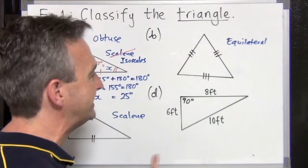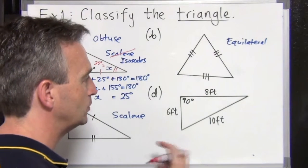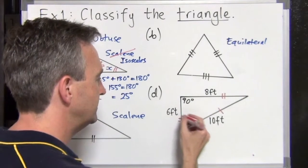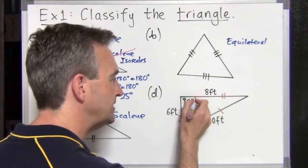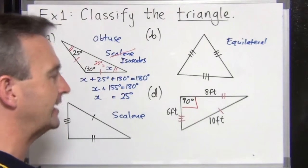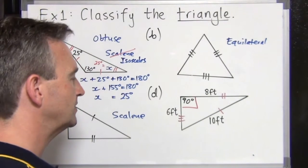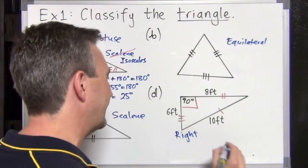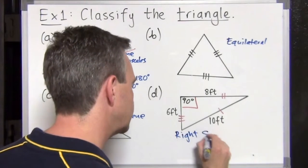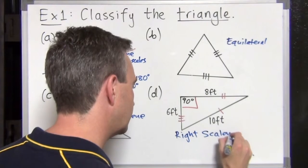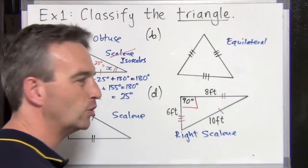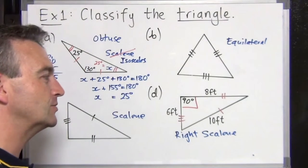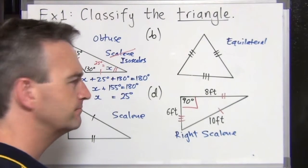The last one, part d, has three different side lengths — 10 feet, 8 feet, and 6 feet — so this is definitely scalene. And this time we definitely have a right triangle, indicated by the right angle symbol. So this is a right angled scalene triangle — or right scalene. I say right angle because I'm Australian, but right angled scalene or right scalene both work.